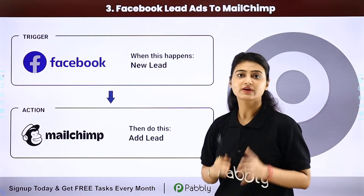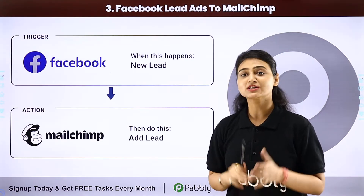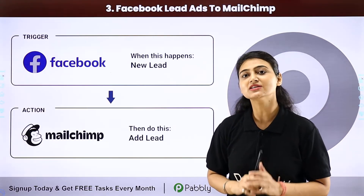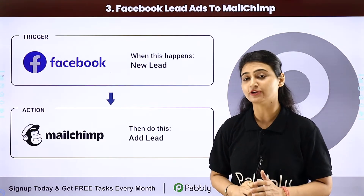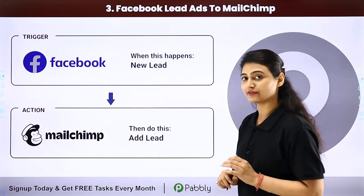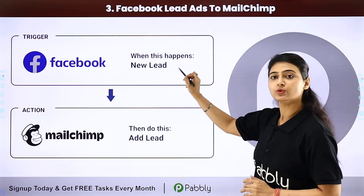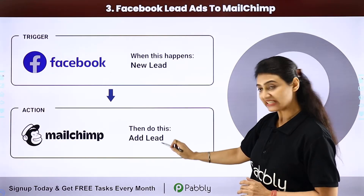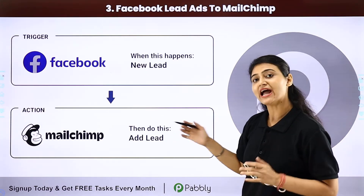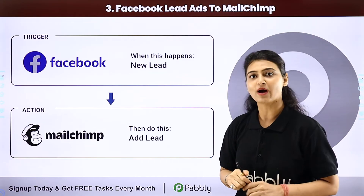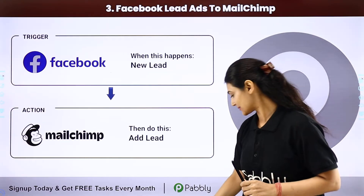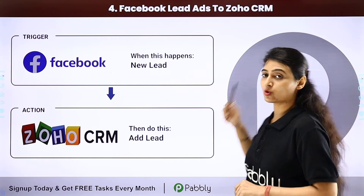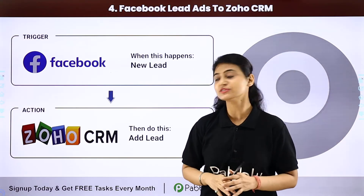Number three is Facebook Lead Ads to Mailchimp. Here's a fun fact — over 42% of companies agree that email is one of the most important lead generation channels. When a new lead is generated via Facebook, it will get added as a lead in Mailchimp and can then be used for email marketing purposes.